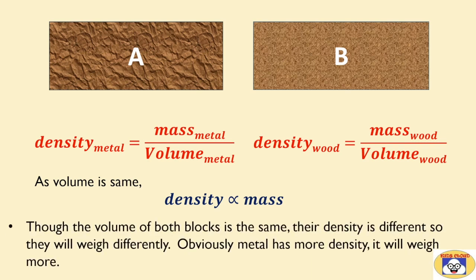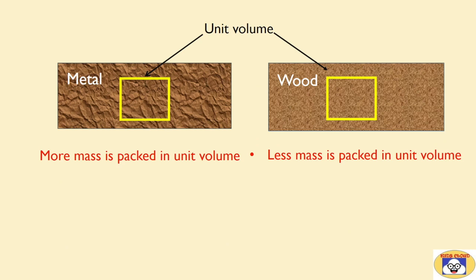Though the volume of both blocks is same, their density is different, so they will weigh differently. Obviously metal has more density, it will weigh more. In another way, we can see that in case of metal, more mass is packed in unit volume, while in case of ore, less mass is packed in its unit volume.